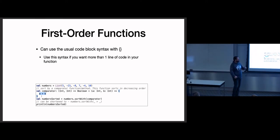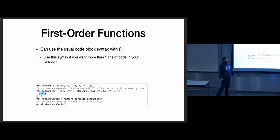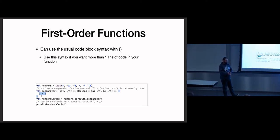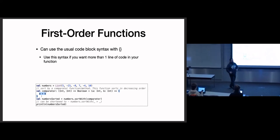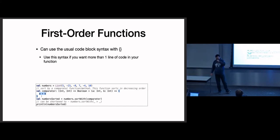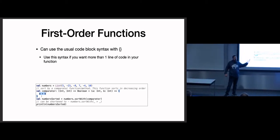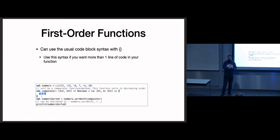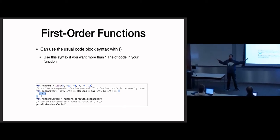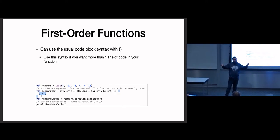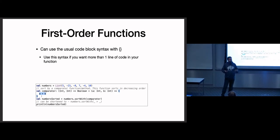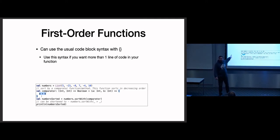I can create a hundred functions — one for everybody in the room based on all your ratings — whereas with methods I would have to have one object or class with a hundred different definitions that I had to cut and paste and change. So it gives us more flexibility. OOP is one solution, one paradigm of approaching how we write software; FP is another. These are two different ways of approaching software engineering, and we're talking about both in this class.